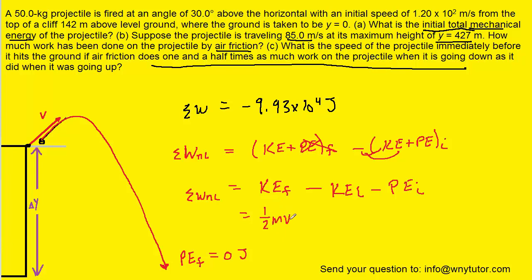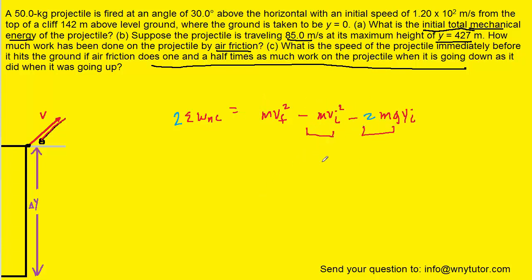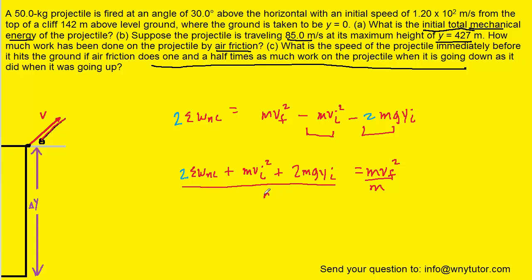We expand to: one-half times mass times final speed squared, minus one-half times mass times initial speed squared, minus mg times the initial height — all equal to the total non-conservative work. To isolate the final speed, we multiply every term by two to cancel the one-halves, move the two negative terms to the left-hand side, divide both sides by mass, and then square root both sides. This gives us the expression for the final speed.